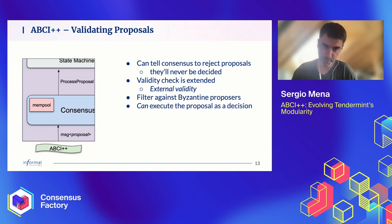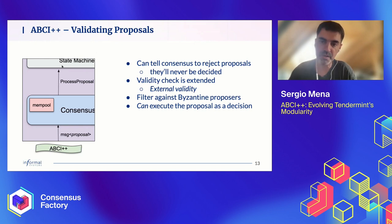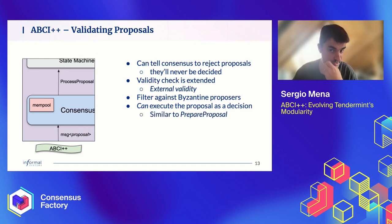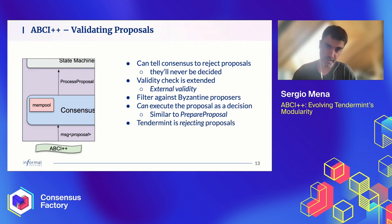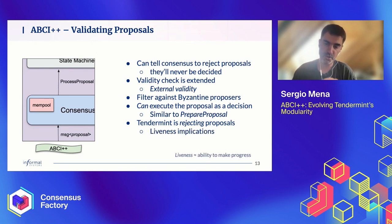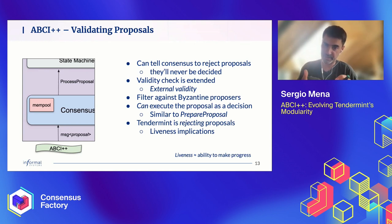This allows us to filter against Byzantine proposals. If a Byzantine node proposes a massive block full of garbage transactions, this is easy for the state machine to detect and say: this proposal is invalid, please don't decide it. However — very important — Tendermint is now rejecting proposals based on logic that is not in the algorithm. This has liveness implications. There are things that are now rejected that didn't used to be. We'll come back to this in the second part of the presentation.